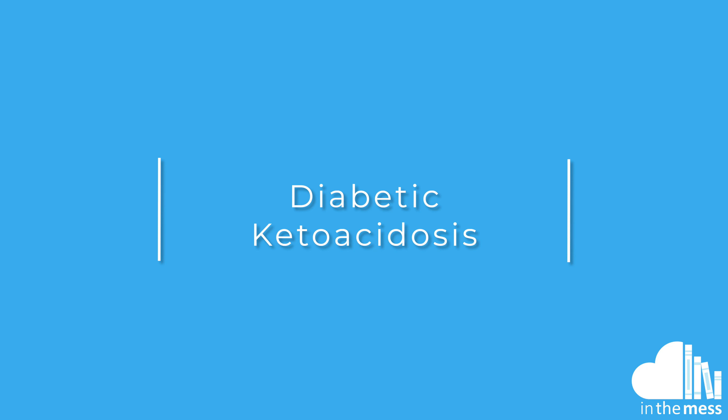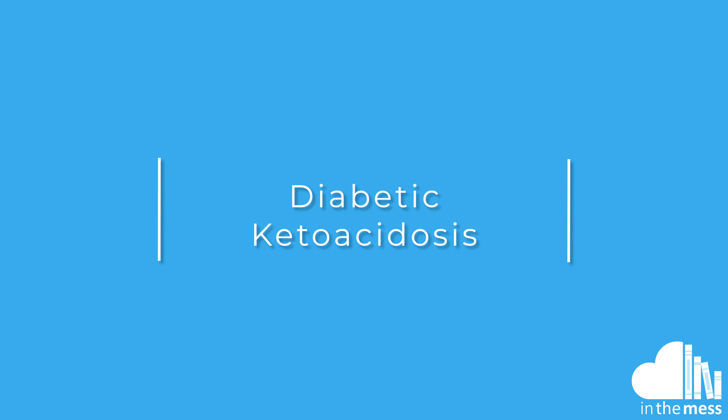Diabetic ketoacidosis is mostly seen in people with type 1 diabetes but can be seen in people with type 2 diabetes, particularly those that are taking SGLT2 inhibitors. Generally what happens is that there's an inadequate amount of insulin circulating to allow for glucose to go into the cells and normal glucose metabolism to occur.